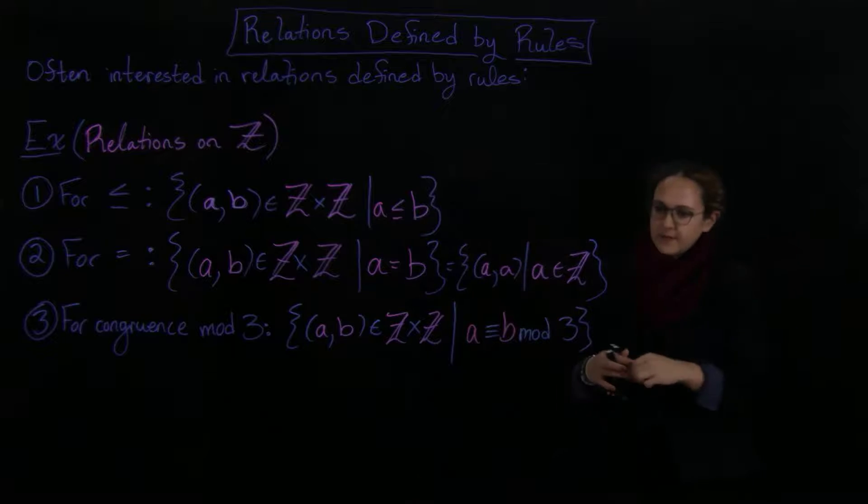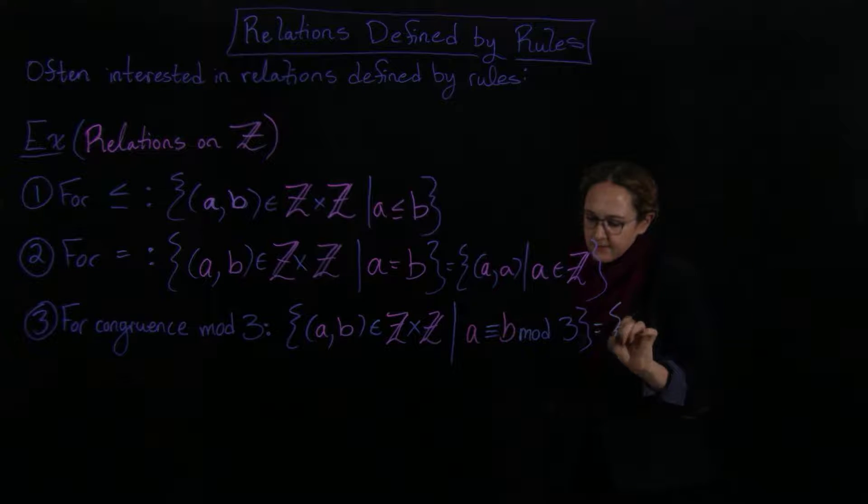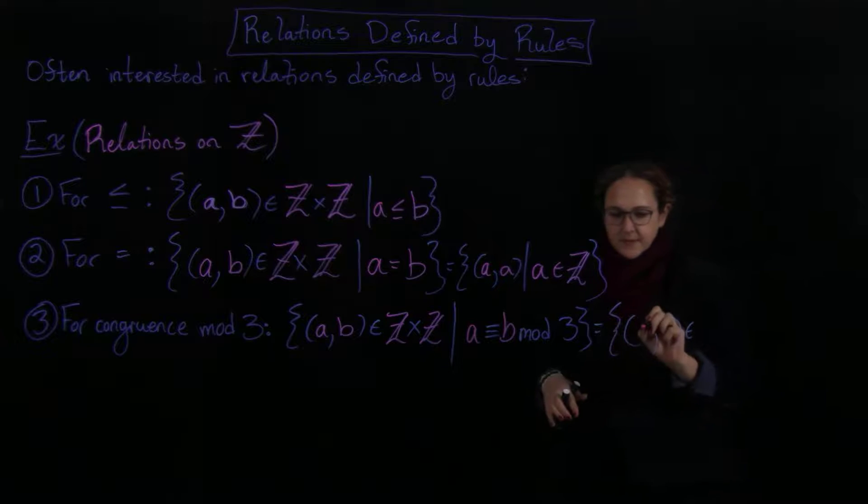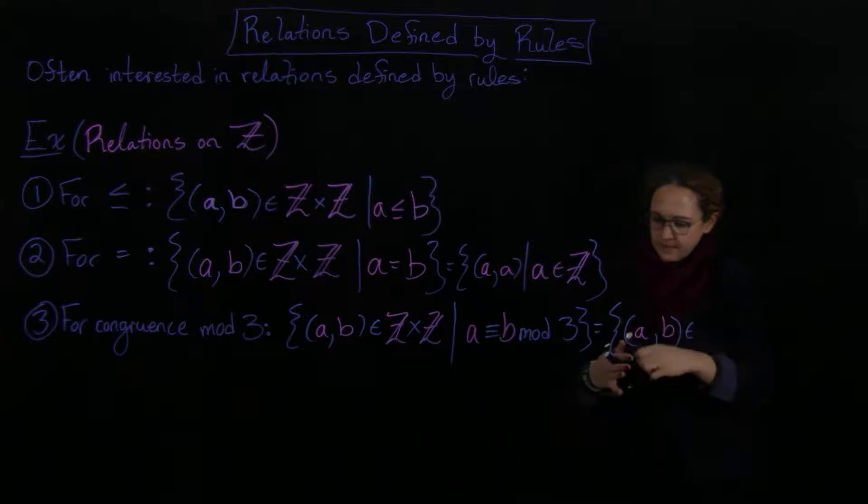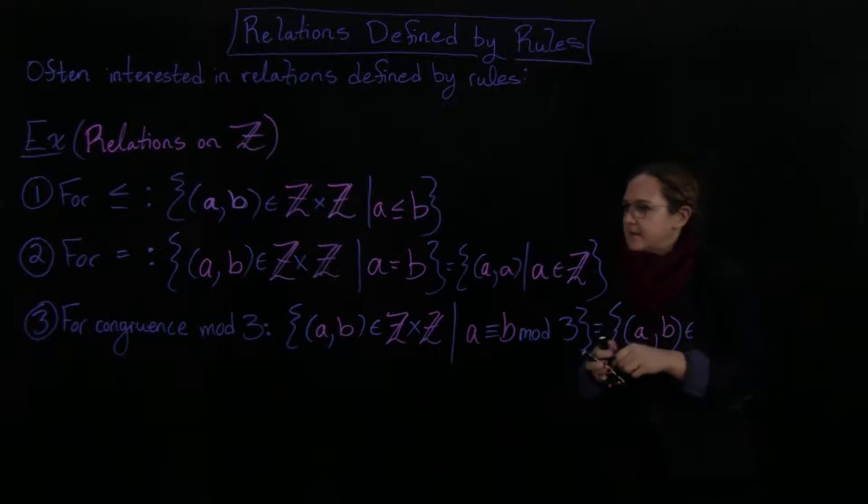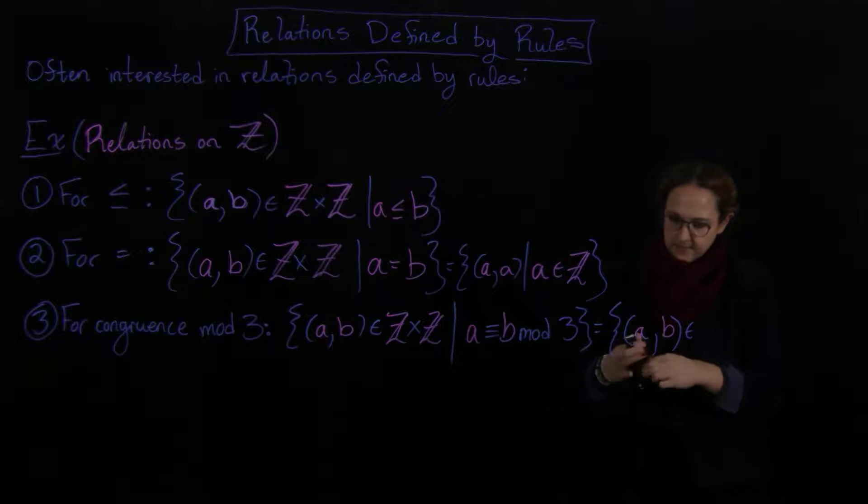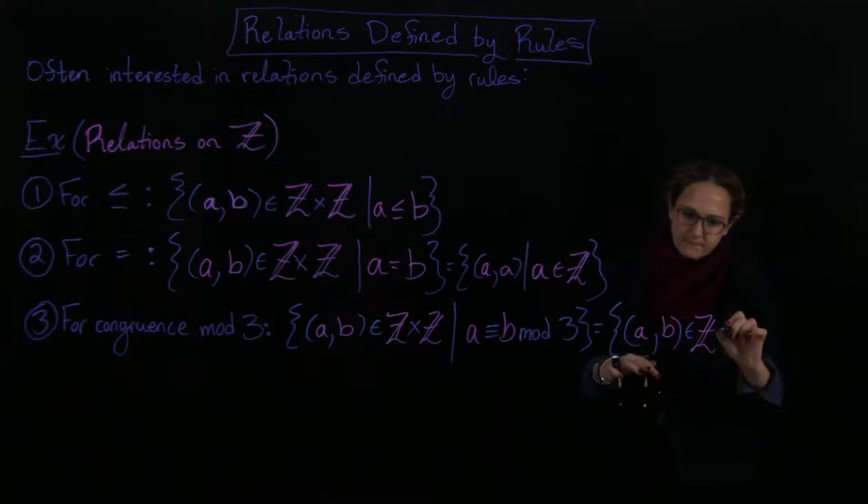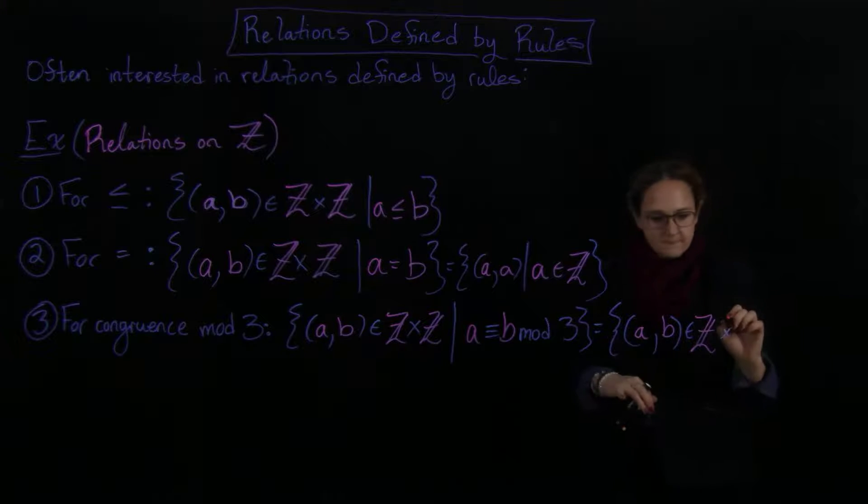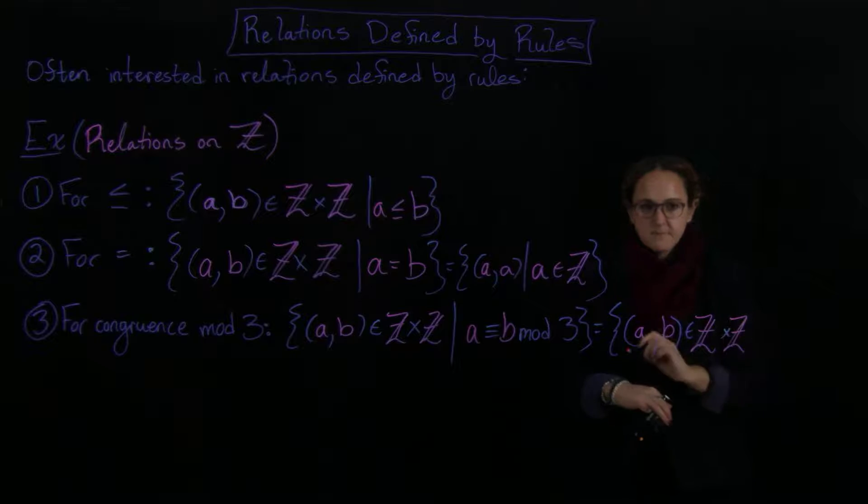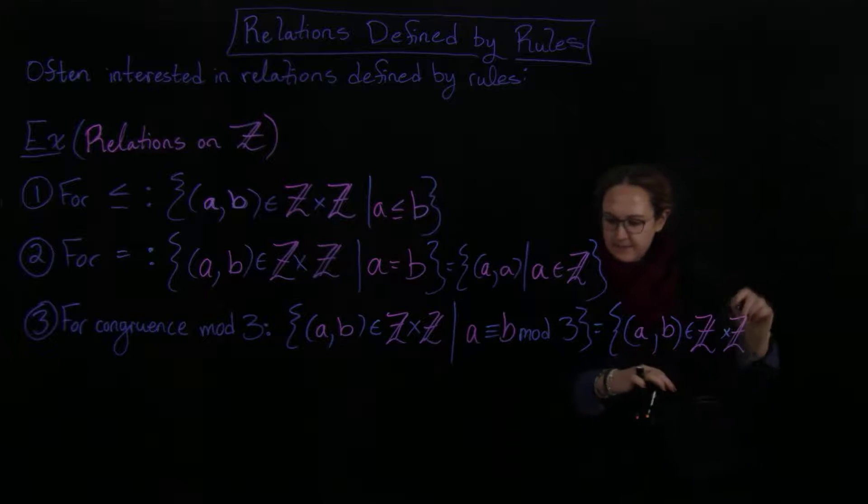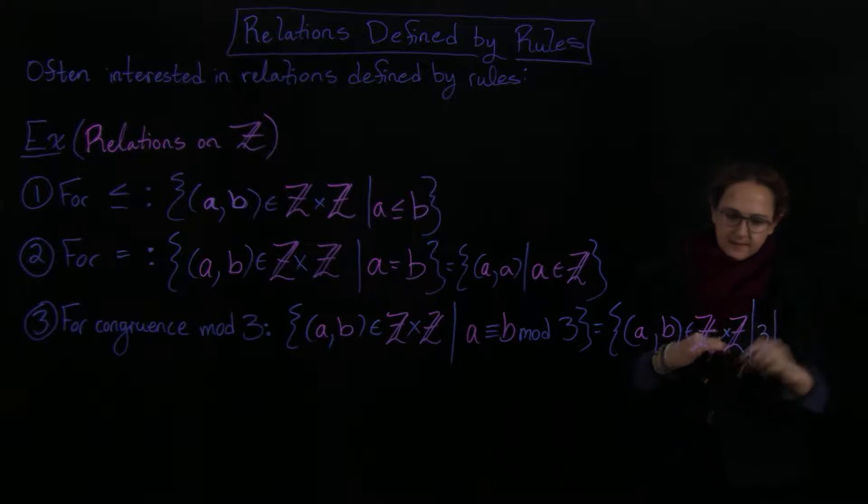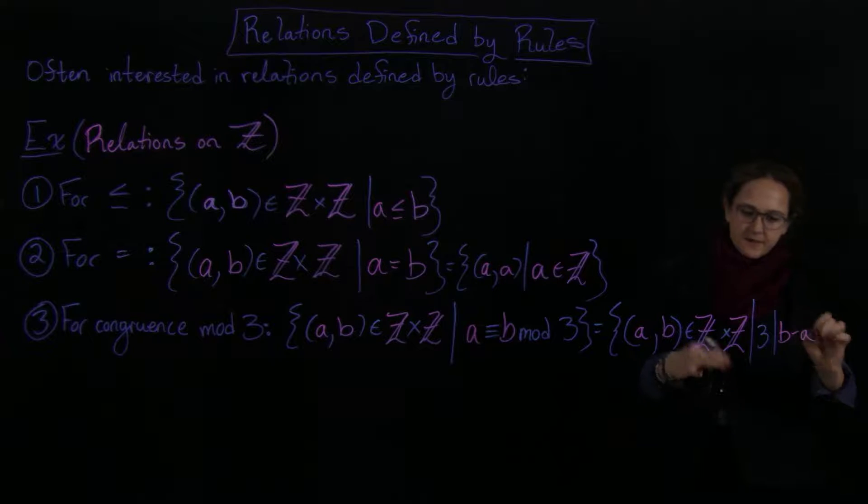Or that this is equal to the set of all, so this is A, B in Z cross Z. Such that, and then we have 3 divides B minus A, so 3 divides B minus A over here.